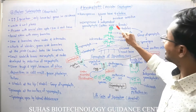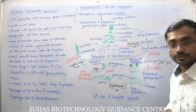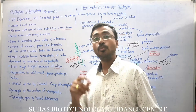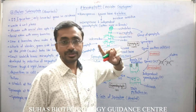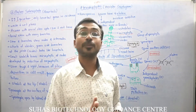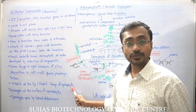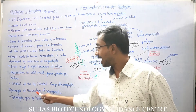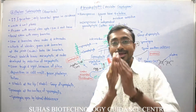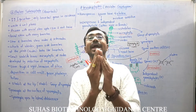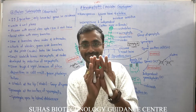Strobilus is present at the top. Strobilus is a group of sporophylls. Sporophylls are modified leaves, modified specially for reproduction — specifically for spore production. On the surface of sporophylls, sporangia are present. Sporangia open by lateral dehiscence, not by apical dehiscence — they open laterally.